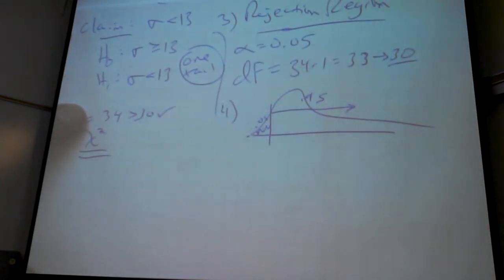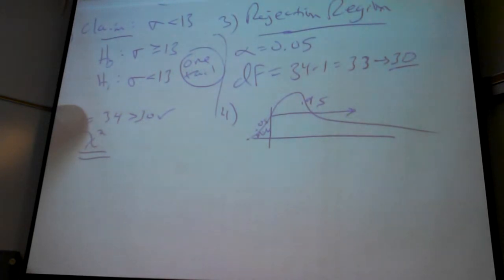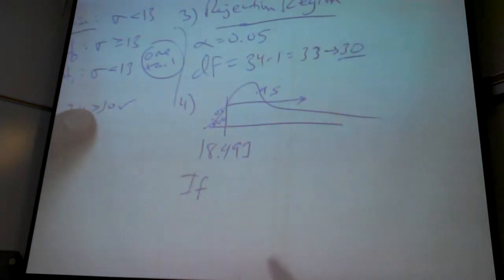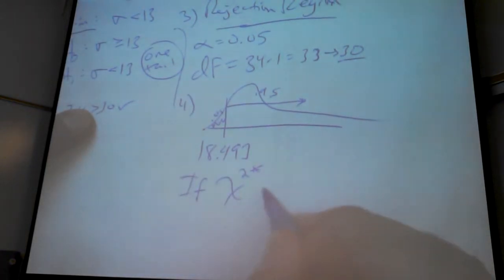So this, I already forgot what it was. What was it? So I'm going to say this in words. If, say again. Good. If Chi Square Star, I like Chi Square Star, is...